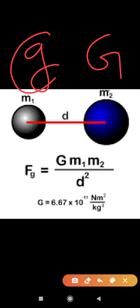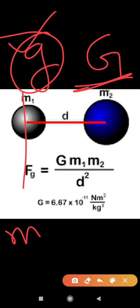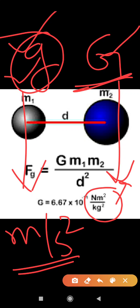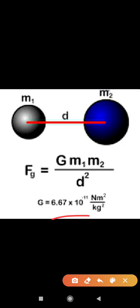Sometimes students get confused between small g and capital G. Small g is acceleration due to gravity, and its SI unit is meter per second square. Capital G is the gravitational constant, with SI unit Newton·meter² per kilogram². The value of G is 6.67 × 10⁻¹¹ N·m²·kg⁻². These are the key differences between small g and capital G. Thank you very much.